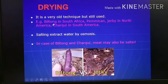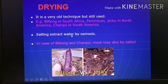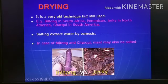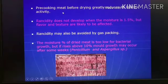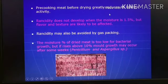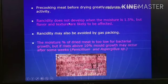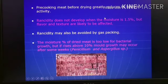Some of the very famous dried meat products are Biltong in South Africa and Jerky in South America. Sometimes salt is also added during drying of meat, which gives an added effect by extracting water by osmosis and making preservation more effective. In the case of Biltong and Jerky, salt is actually added. Generally pre-cooking should be done before drying — meat should be cooked first for better drying and to reduce the lipolytic activity, which causes lipolysis and leads to rancidity. Rancidity does not develop when the moisture is 1.5%, but reducing moisture to such a level affects flavor and makes texture very hard.